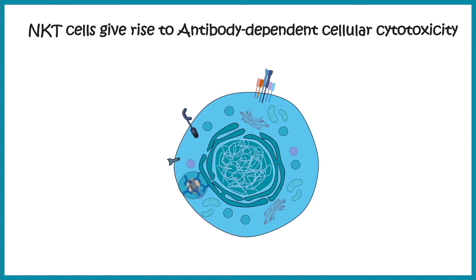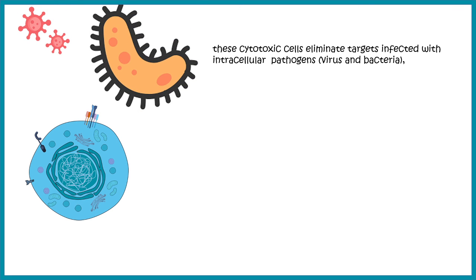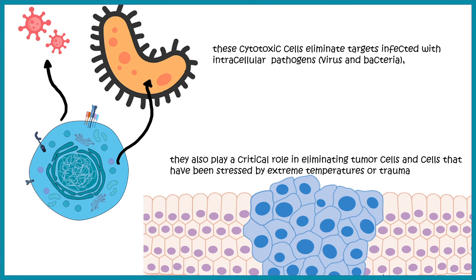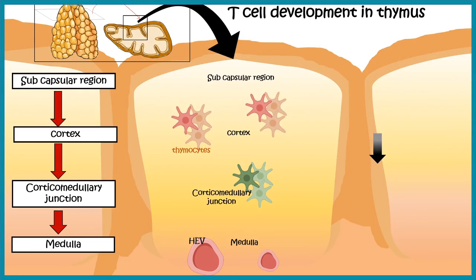NKT cells also have FC receptors, enabling them to engulf opsonized pathogens — similar to antibody-dependent cellular cytotoxicity (ADCC) mechanism. In short, these cells eliminate targets infected with intracellular pathogens, intracellular bacteria, or viruses, and they also have a profound role in tumor immunity, making NKT cells an interesting and actively researched cell type.